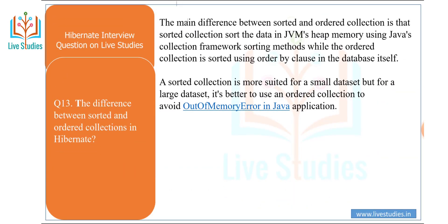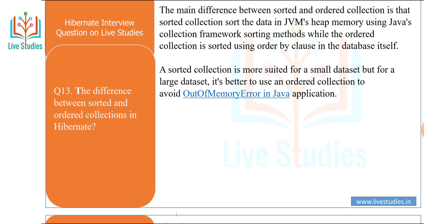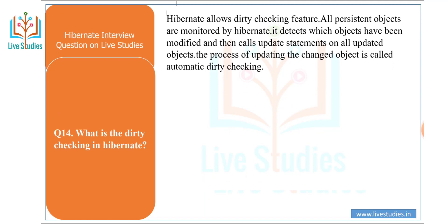Next question: what is the difference between a sorted and an ordered collection in Hibernate? A sorted collection sorts data in JVM heap memory using the Java collection framework's sorting methods, while an ordered collection is sorted using the ORDER BY clause in the database itself. A sorted collection is more suited for a small data set, but for a large data set it is better to use an ordered collection to avoid OutOfMemoryError exceptions.